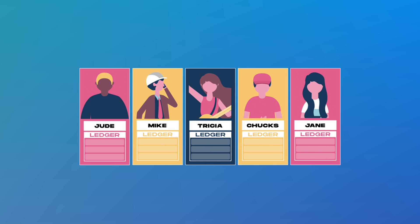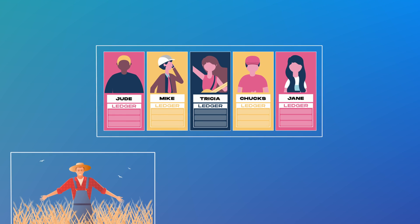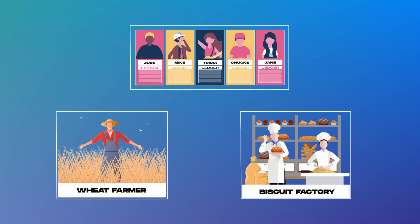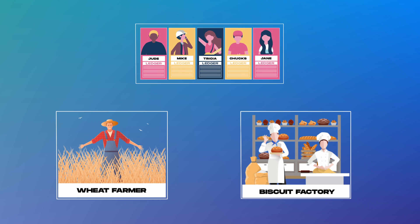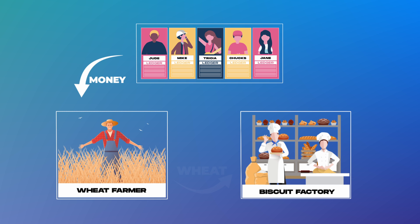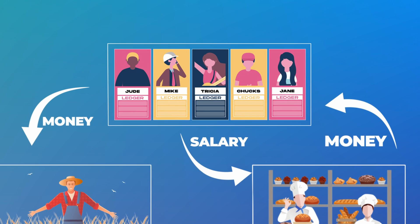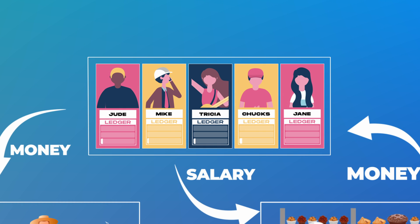Let's say I went into the biscuit manufacturing business with five of my friends. In this business we have to purchase wheat from the farmer, pay our workforce to process the wheat into biscuits, and make sales to earn profits. So money flows out from our accounts to the farmer and the workers, and flows back into our accounts from the sales of the biscuits.